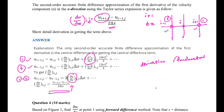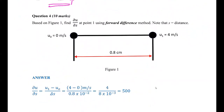For the last question — a very simple question. You are given a simple diagram and required to find the derivative at point 1 using the forward difference method. Forward difference is just the value at the next point minus the original point, divided by the distance. The distance DS is given as 0.8, so substituting those values gives you an answer of 500.